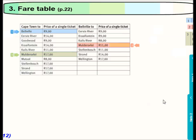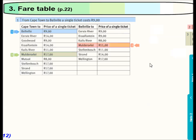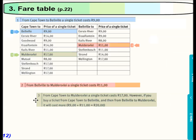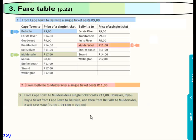Let's look at the fare timetable. Cape Town to Belleville — the price of a single ticket will be R9.90. From Belleville to Ester River, a single ticket would also be R9.90. From Belleville to Molder's Flay will be R11.90. And from Cape Town to Molder's Flay directly would be R17.90. So you don't pay Cape Town to Belleville and then Belleville to Molder's Flay separately — you can go directly from Cape Town to Molder's Flay for R17.90.